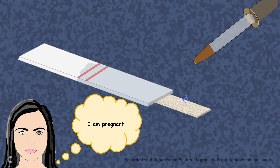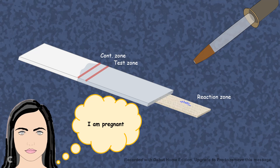Looking at the particular pregnancy strip, we can see there is a reaction zone, there is a test zone, and there is a control zone. In a little bit we would understand the details of all of these.